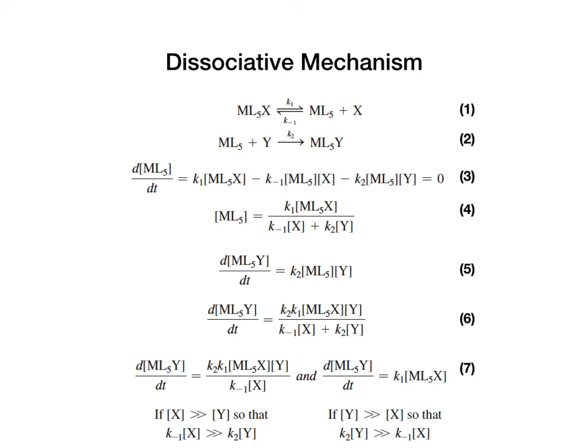Let's talk about the first mechanism: the dissociative mechanism, commonly observed in ML6 complexes. In the first step, the ML6 complex dissociates one of its ligands, designated as X, producing an ML5 intermediate and free ligand X. This ML5 complex forms a C4V structure instead of an octahedral structure. In the second step, the ML5 intermediate reacts with the incoming free ligand Y to produce the reaction product ML5Y.